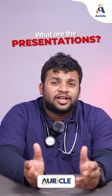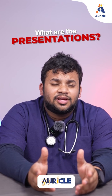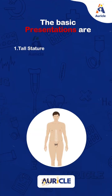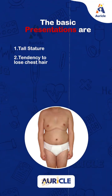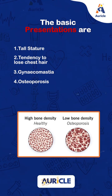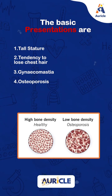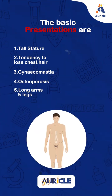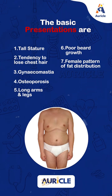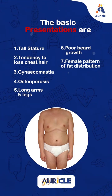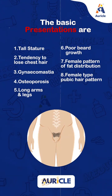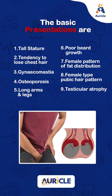So what are the presentations of Klinefelter syndrome? The basic presentations are tall stature, tendency to lose chest hair, gynecomastia, osteoporosis, long arms and legs, poor beard growth, female pattern of fat distribution, female pubic hair presentation, and testicular atrophy.